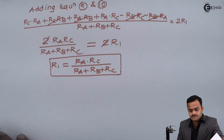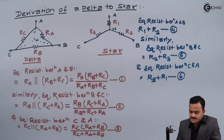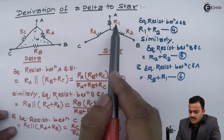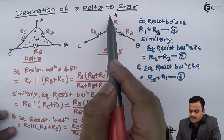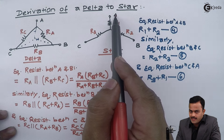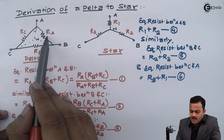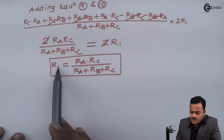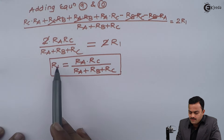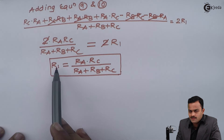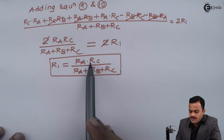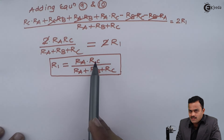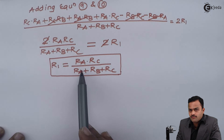Going back to the original circuit, I have the delta with R_A, R_B, R_C and equivalent star gives R1, R2, R3. R1 is the resistor connected to point A. In the original delta circuit, for point A, R_A and R_C were connected. So you can remember: the resistors connected to point A — it is their multiplication divided by the addition of all 3 resistors.